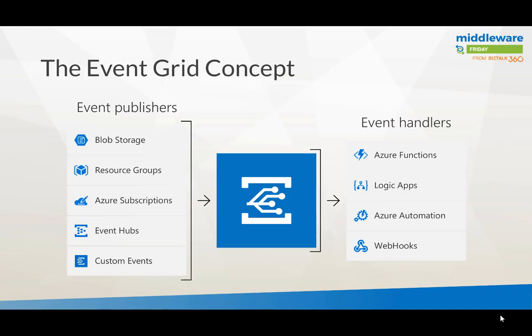On one end you have event publishers — the sources — which can be all types of Azure services, Blob, Resource Groups. So if a VM is being created or an instance of Cosmos DB, that event can be pushed towards Event Grid. Then you can have multiple event handlers — it's kind of many-to-many or one-to-many. There's also a capability for custom events, which I'll have a demo for later.